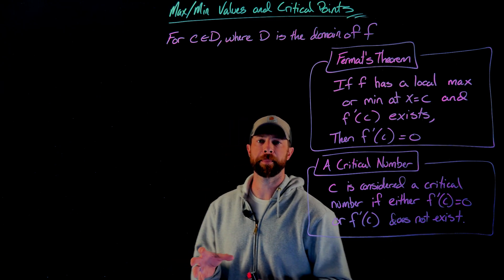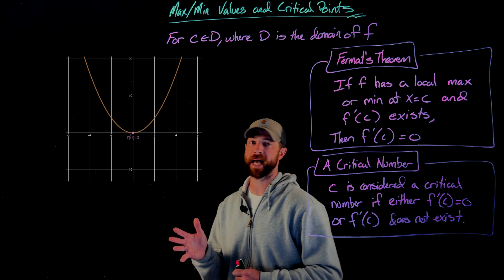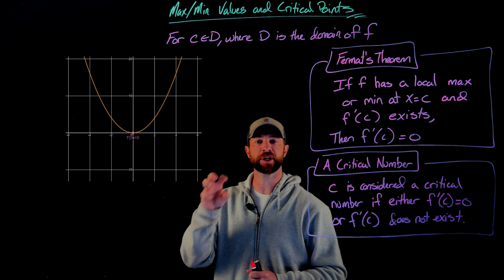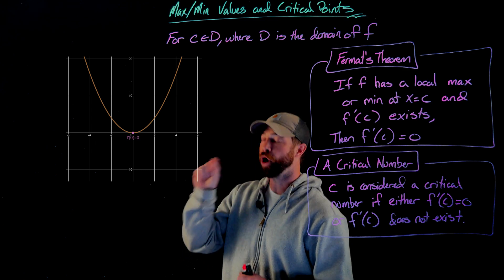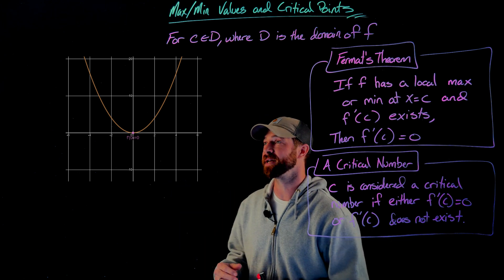So again, just some quick graphical representations of these concepts right here. If we look at f(x) equals x squared, f prime of 0 is 0. So x equals 0 is a critical number. And it's also the absolute, it's a local min and the absolute min for this function.